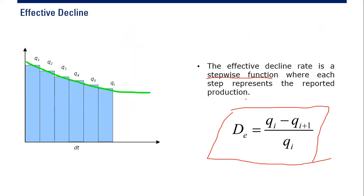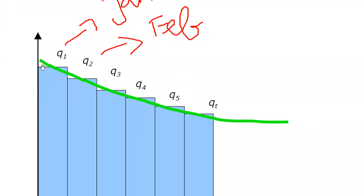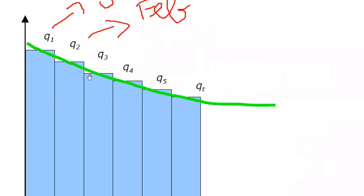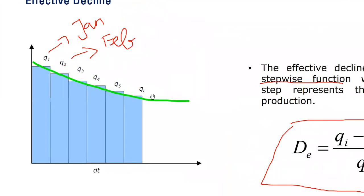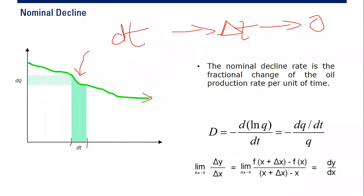Each step represents the reported production. For example, qi is the flow rate in January and q2 is the flow rate in February. The effective decline rate is the production rate in January minus production in February, divided by production in January. When you go from February to March you get another effective decline. With this stepwise function, if you want to calculate cumulative production you will miss something — a portion of it. You can see the white triangles; they will not be considered in the computation.